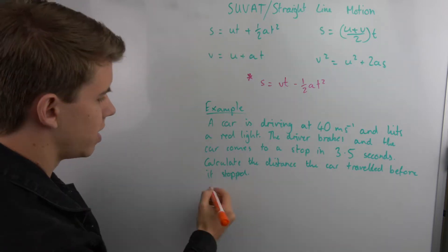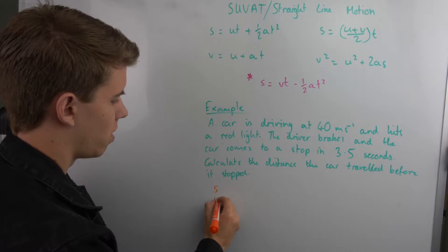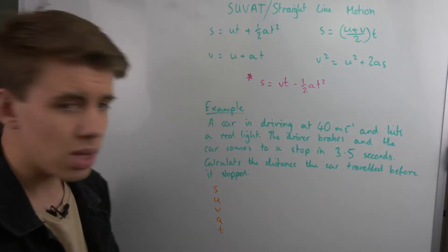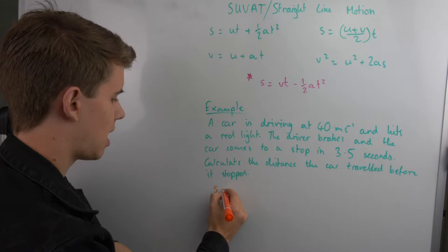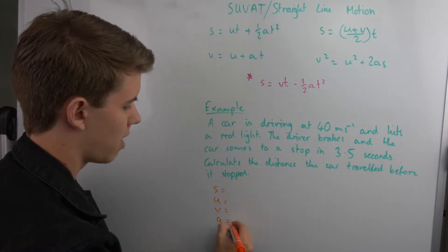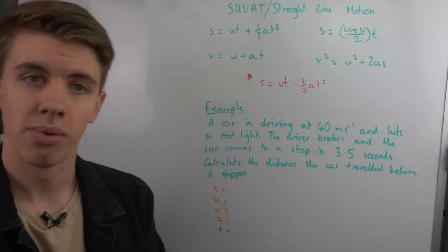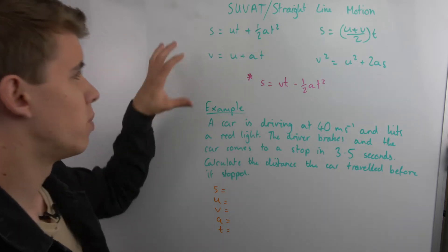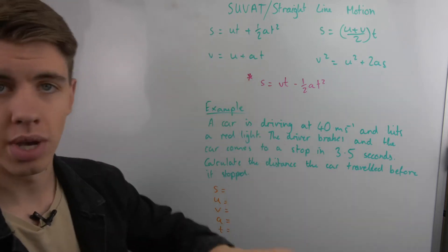First thing we want to do is write a list of the phrase SUVAT. What you can then do is have a list of writing out what variables you actually know from the question, and that can help you then work out which ones are missing and which ones you have to use.